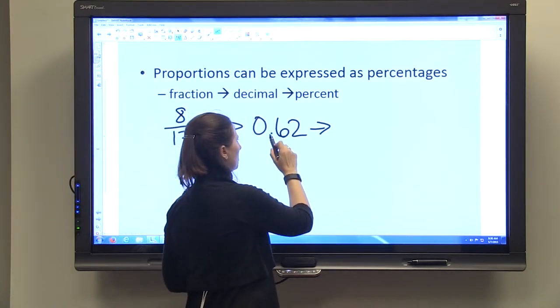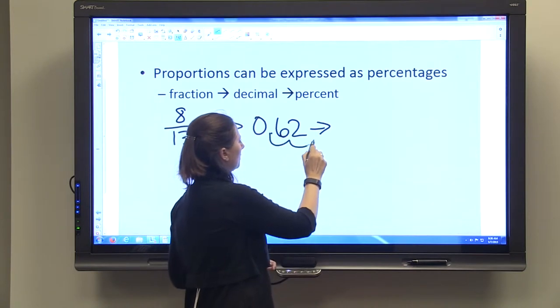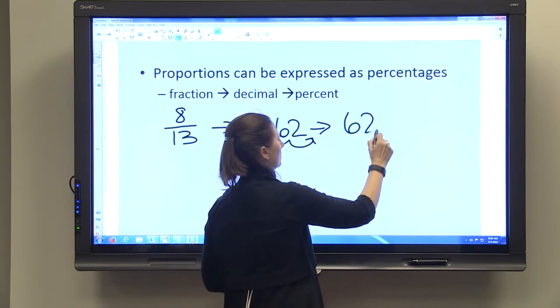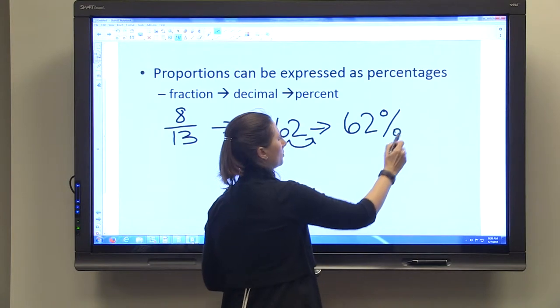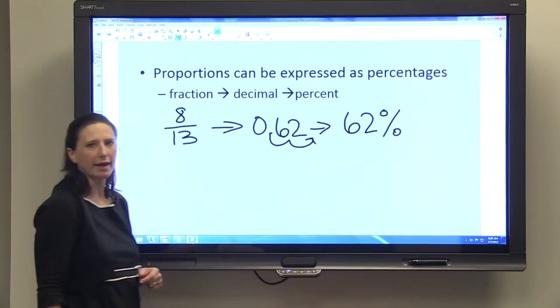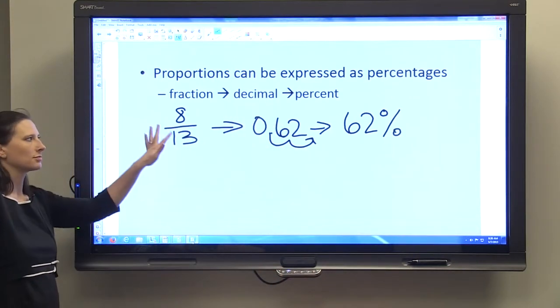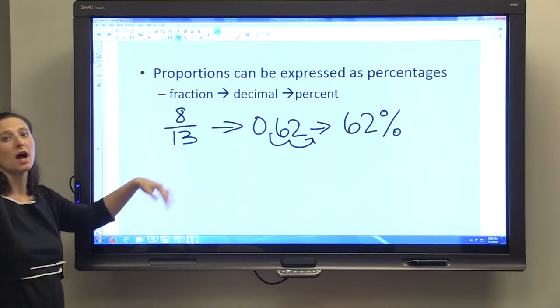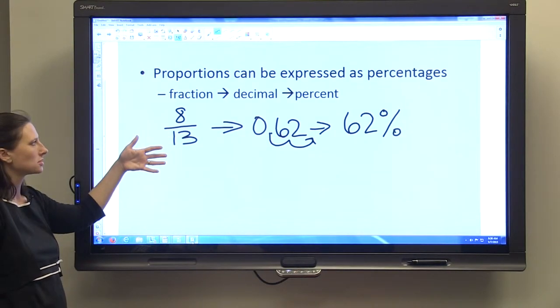We do that by moving the decimal point, and what we have is that 62% of the animals are bears. You can use this original proportion, which you got from your original ratios, to determine the percentage of animals that are bears.